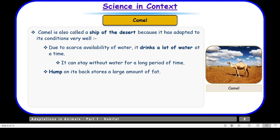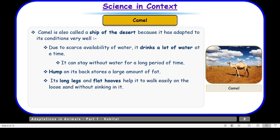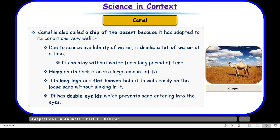The hump at the camel's back stores a large amount of fat. It has long legs and flat hooves which help it walk easily on loose sand without sinking, and these long legs also keep the heat of the sand from directly touching the body. The broad leathery feet help disperse weight evenly over a wider area so they don't sink in sand. It also has double eyelids which prevent sand from entering the eyes, protecting them from blowing desert sand.